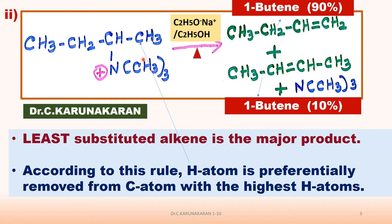Another example to clearly demonstrate this Hoffman rule: here there are three methyl groups which cannot form an alkene. Only this alkyl group can form an alkene, and there are two possibilities. Hydrogen atom can be removed from here, forming ethylene, or hydrogen atom can be removed from the other carbon, forming 1-butene. According to this rule, hydrogen atom is preferentially removed from the carbon atom with the highest number of hydrogen atoms.